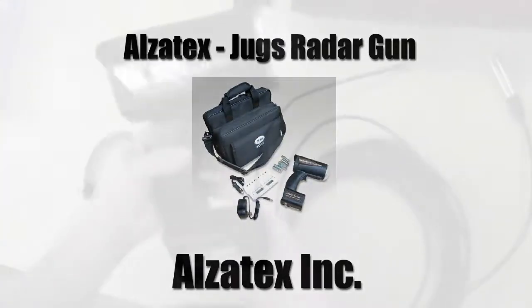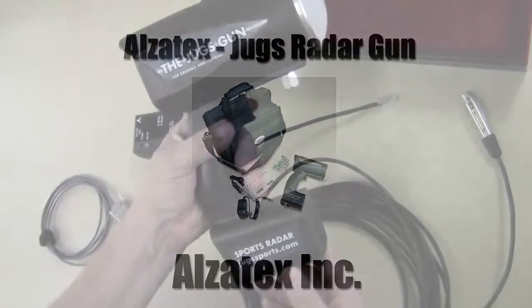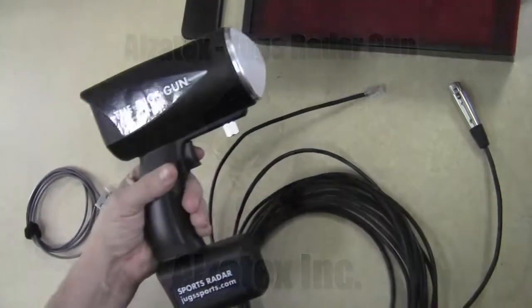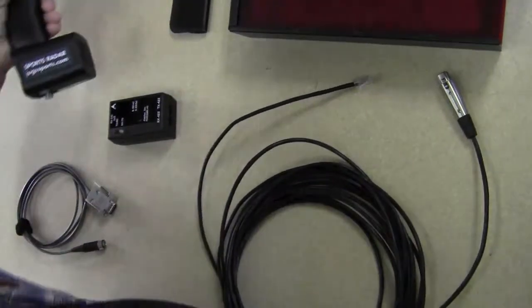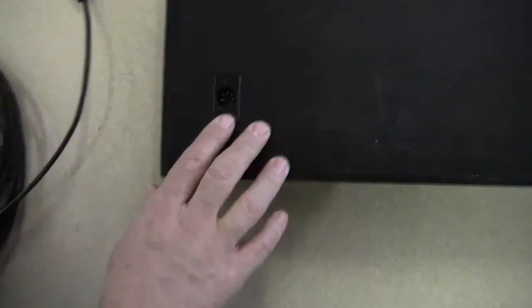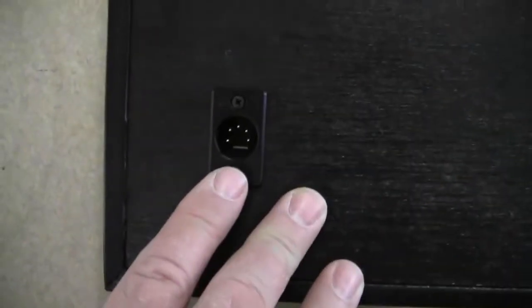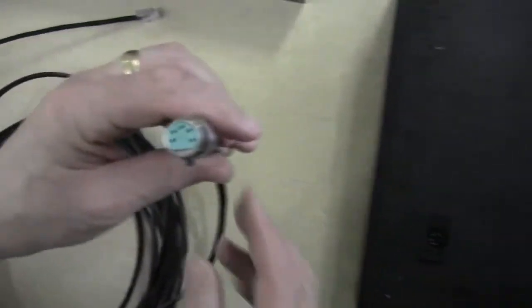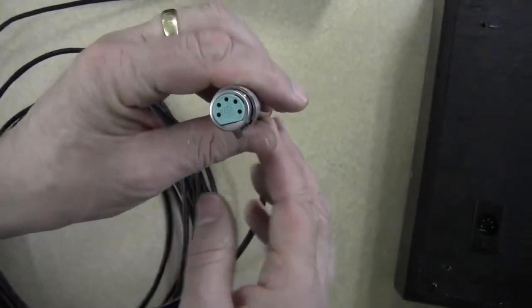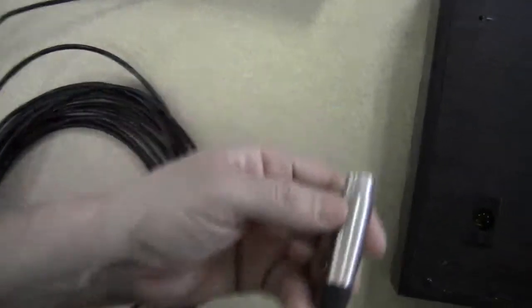Today we're going to connect a JUGS radar gun to an OES display. Now the OES display here has on it a 5-pin XLR connector. And we're going to connect a female 5-pin XLR connector to the connector on the back of the display.